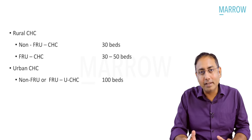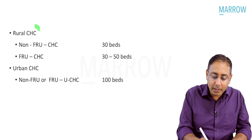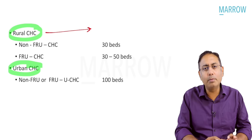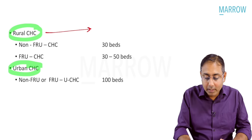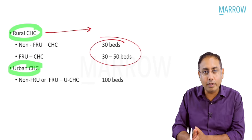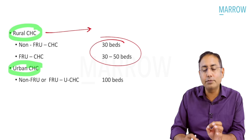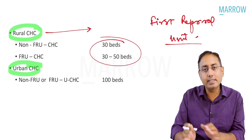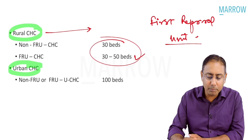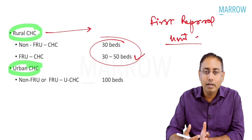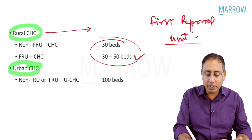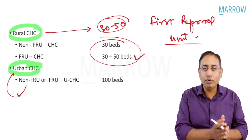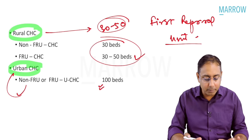Regarding beds: a rural CHC has roughly 30–50 beds, with or without FRU (First Referral Unit). In the case of urban CHC, whether FRU or non-FRU, it is almost always taken as a 100-bedded hospital.